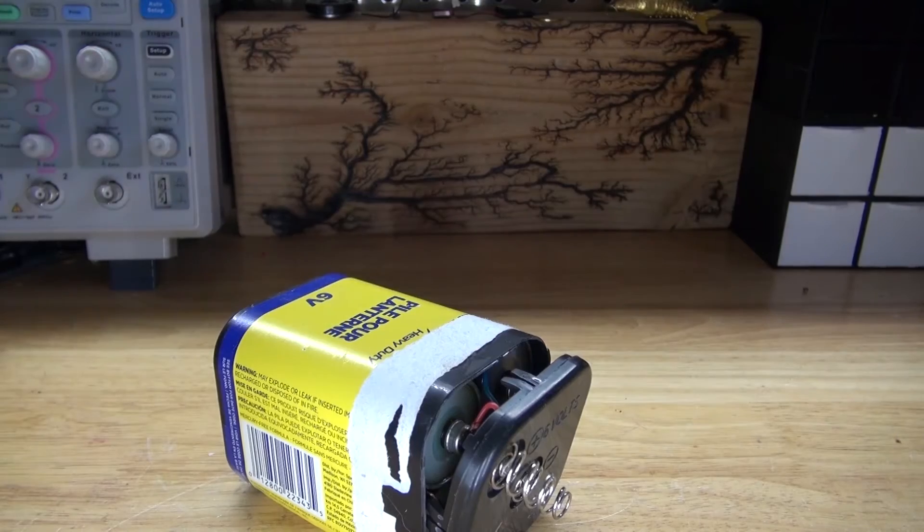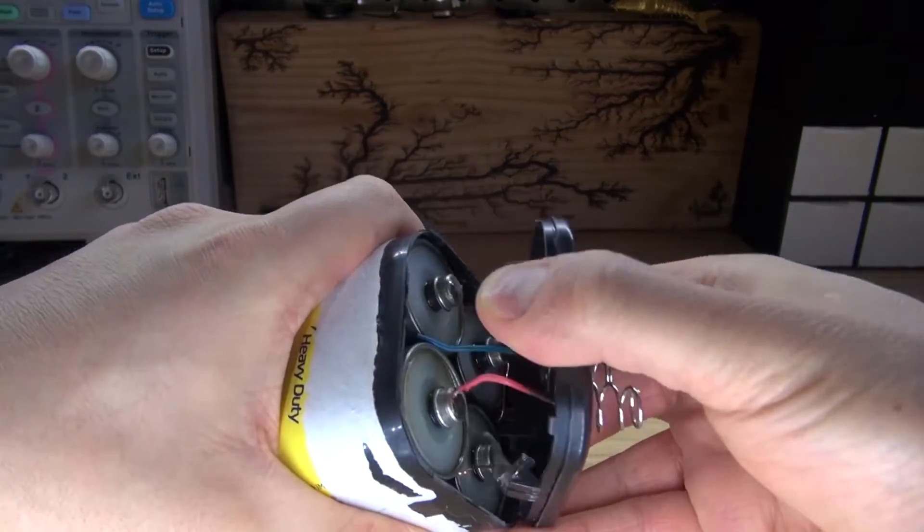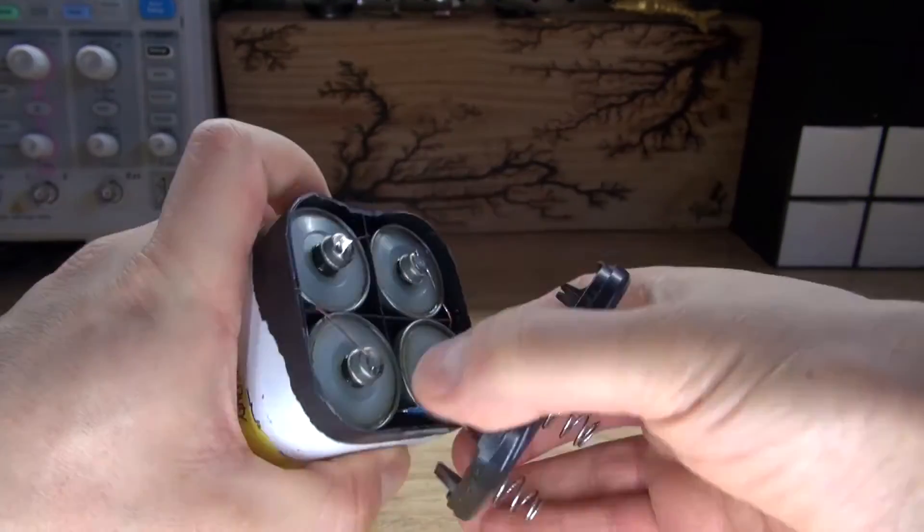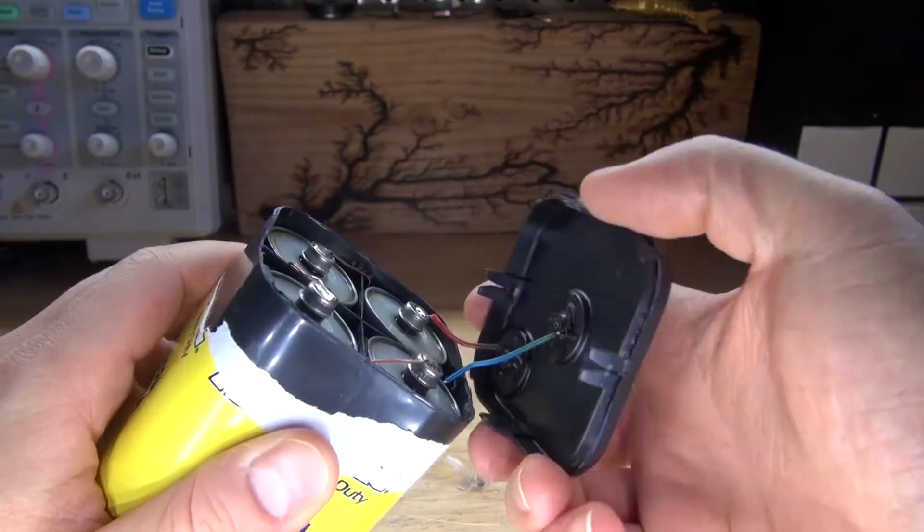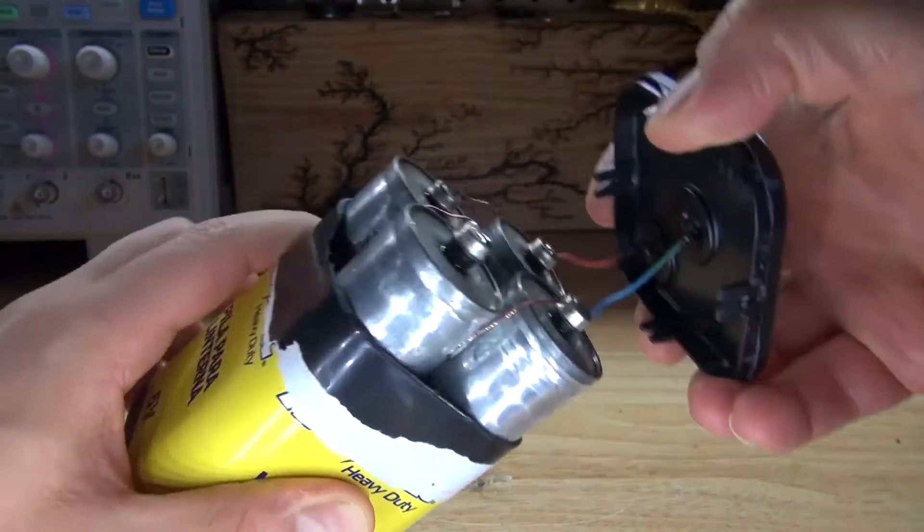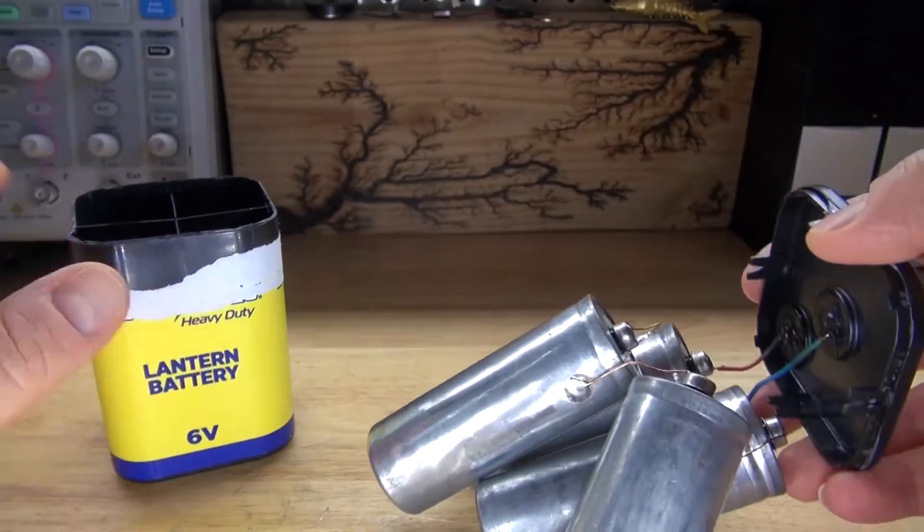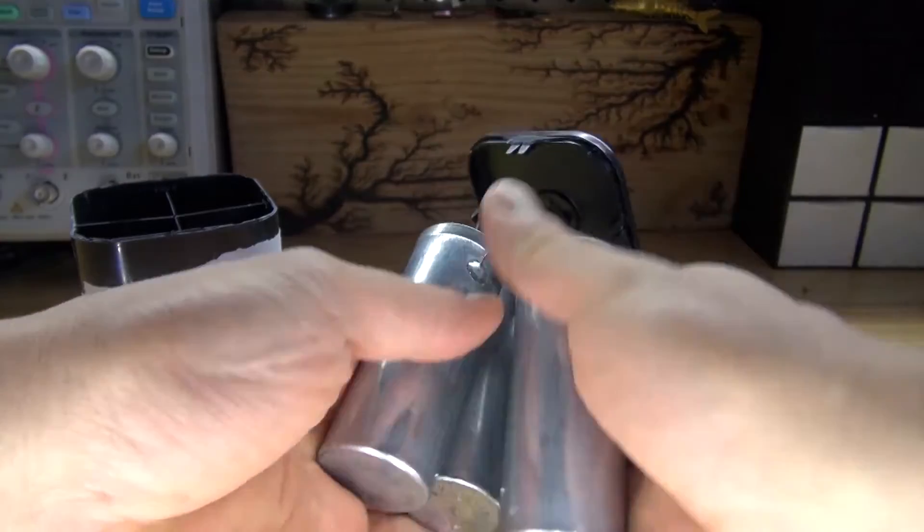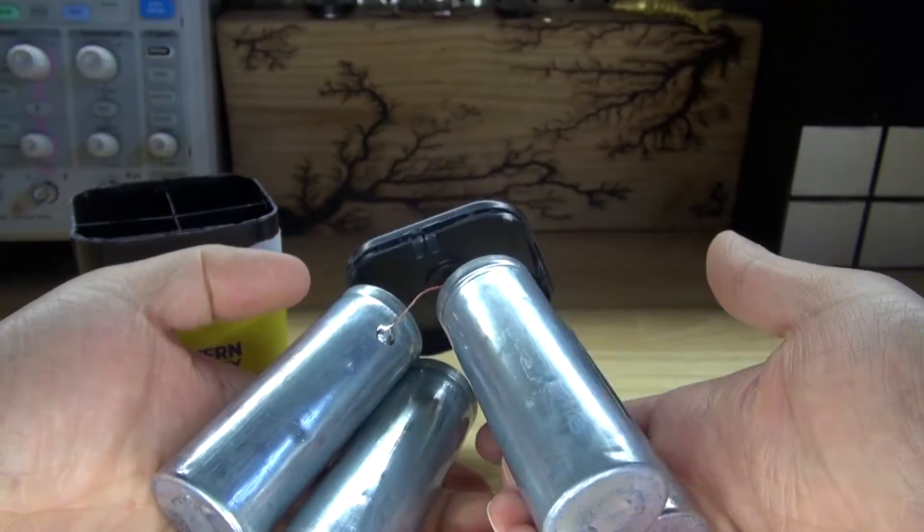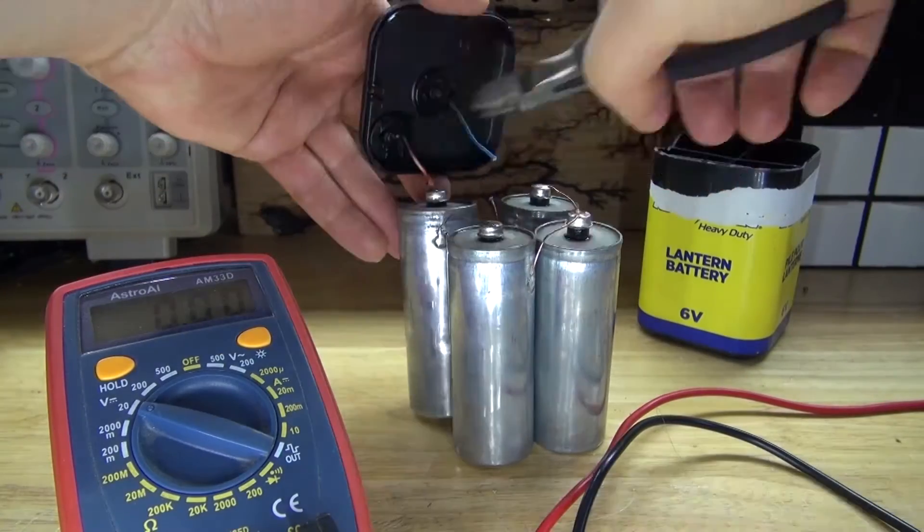Open it up and pull out the battery cells that are inside. Hmm, that's very interesting looking. Pull it out just like this and as you can see it is simply 4 battery cells which means I'll have 4 carbon electrode rods. Next I'm going to simply cut all the wires.